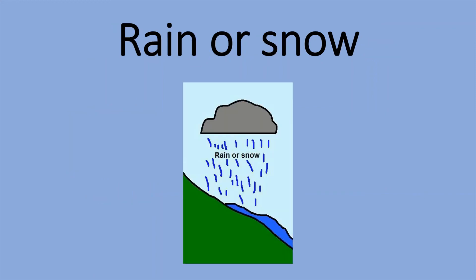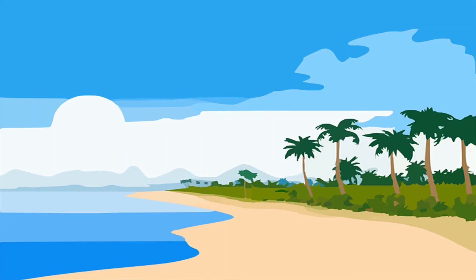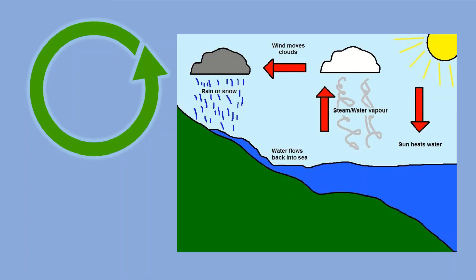This water in clouds falls down as rain or snow. This process is called precipitation. This rain and snow again forms lakes, oceans, or seas and goes back into water bodies. And this process repeats again and again, causing the water cycle. Thank you.